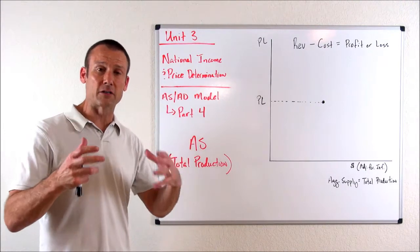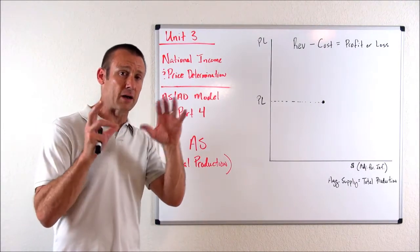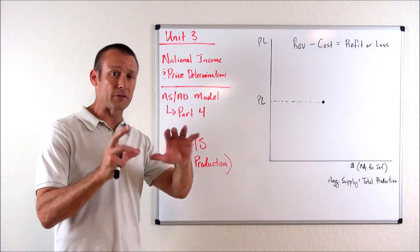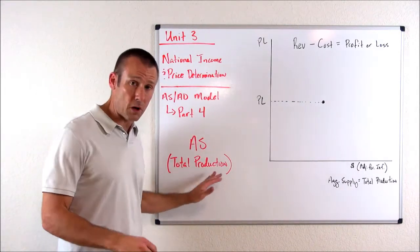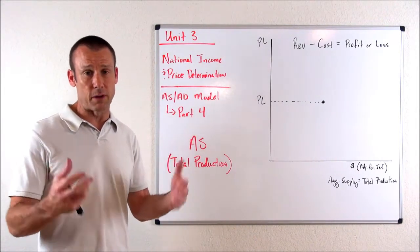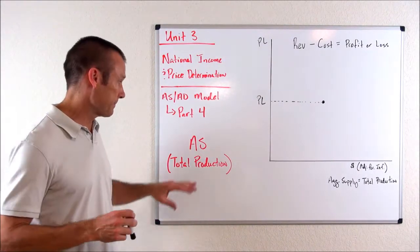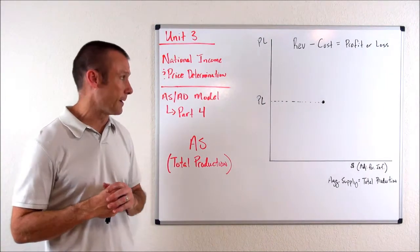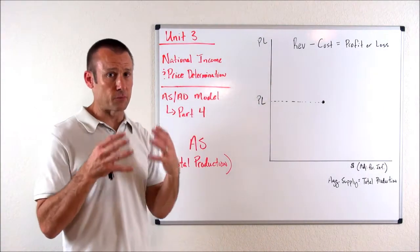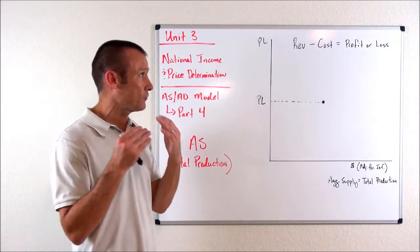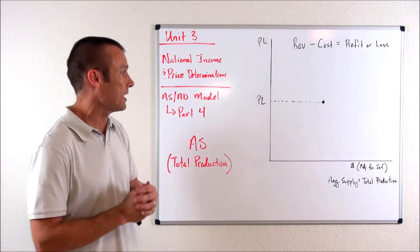So aggregate supply, once again, is the aggregation of the supply of all domestically produced goods and services — the total production of all domestically produced goods and services. That's the curve we're focused on right now. Here's our graph, and I'm just using it to focus on AS right now, just AS.